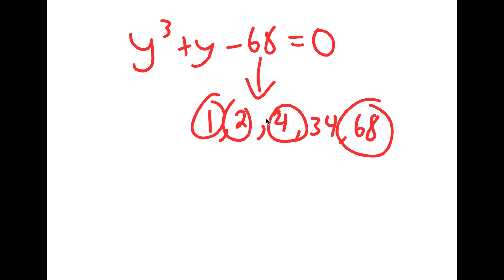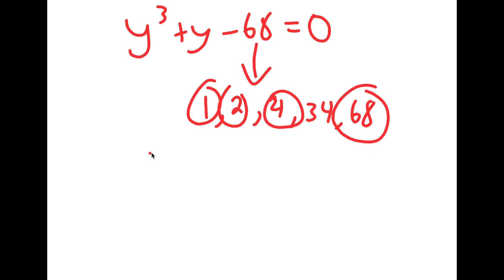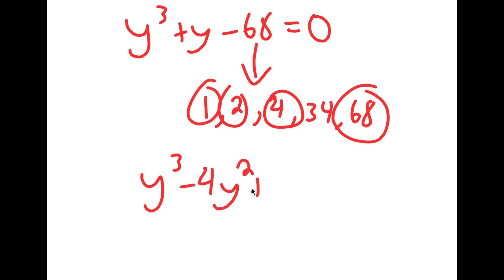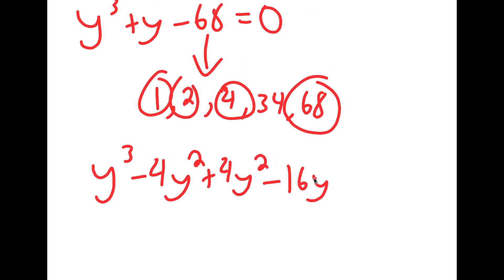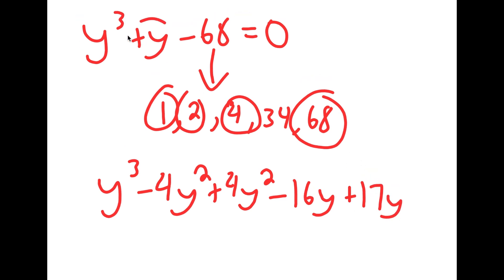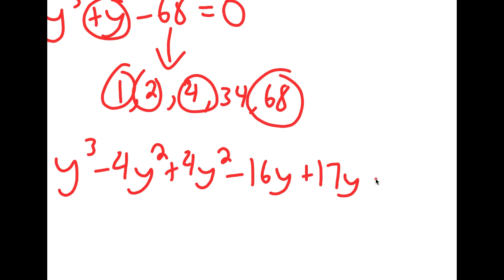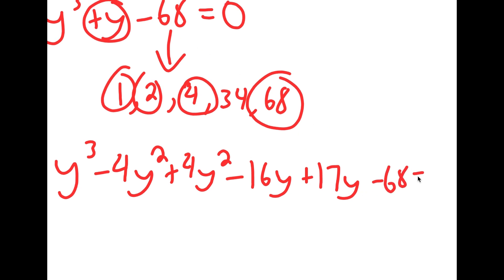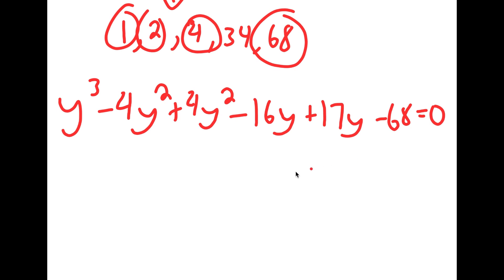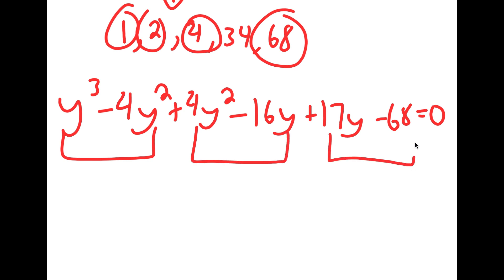Now that we know that 4 is a proper factor, for my original equation y to the power of 3, I'm going to rewrite this as y to the power of 3 minus 4y squared plus 4y squared minus 16y — which is 4 squared — plus 17y, because negative 16y plus 17y is equal to y, and finally minus 68 at the end, is equal to 0.